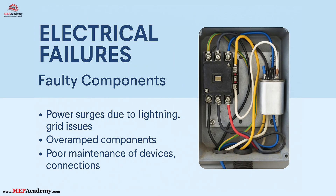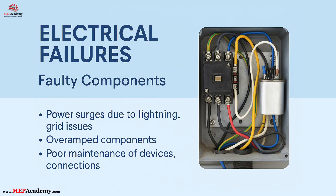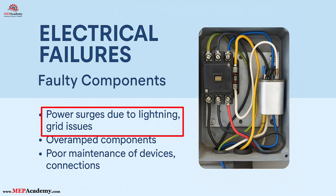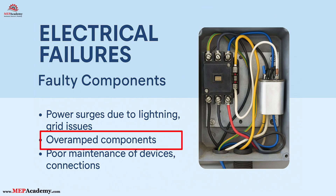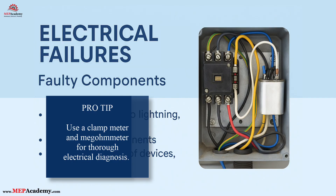Number six: electrical failures — faulty components. From bad contactors to failed capacitors and sensors, electrical failures can take down an otherwise healthy refrigeration system. Always inspect for loose terminals and degraded wiring. Common causes: power surges from lightning strikes, utility grid switching, or large equipment cycling; over-amped components when motors draw more current than designed due to mechanical binding, low voltage, or internal faults; and poor maintenance allowing dust, corrosion, loose connections, or worn components to cause overheating, arcing, and eventual breakdown. Pro tip: use a clamp meter and megohmmeter for thorough electrical diagnosis.